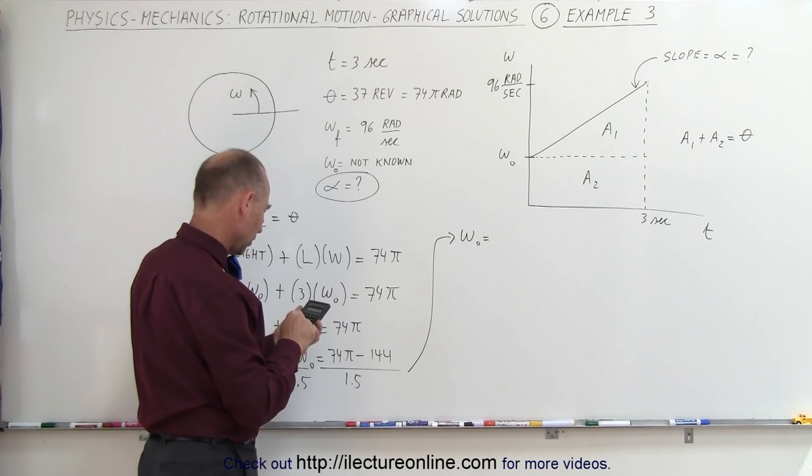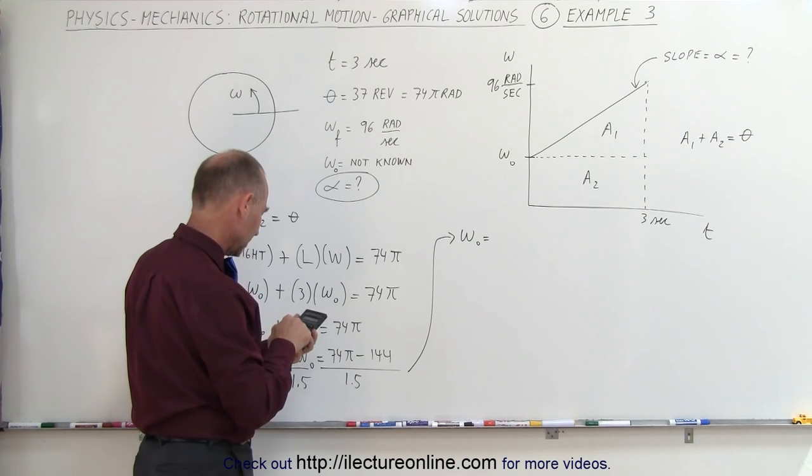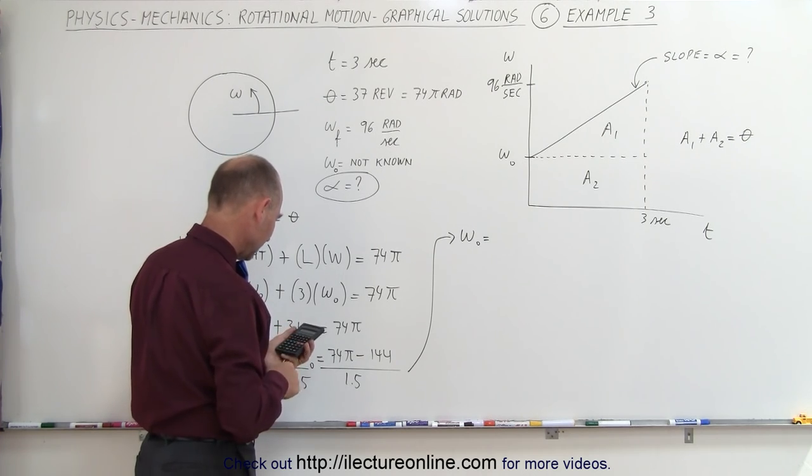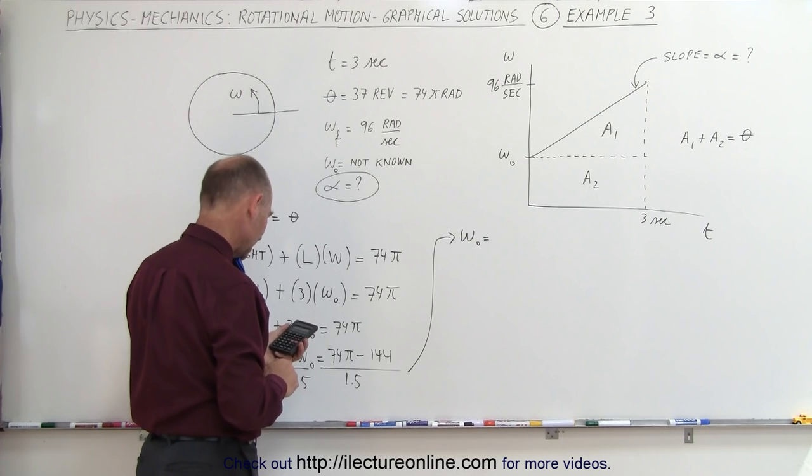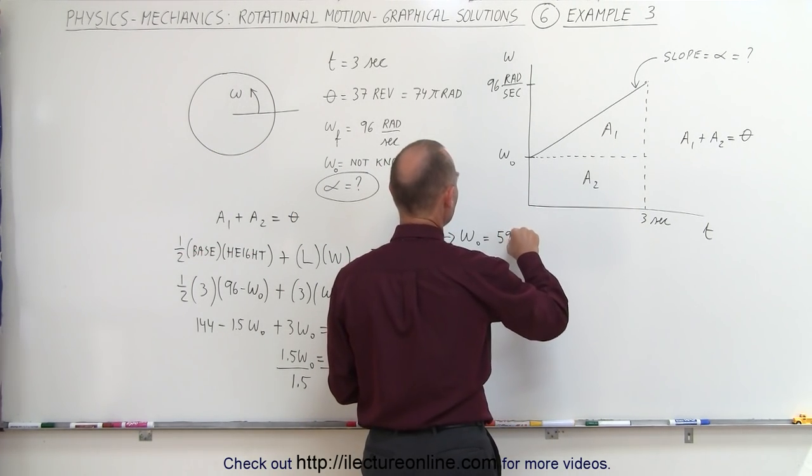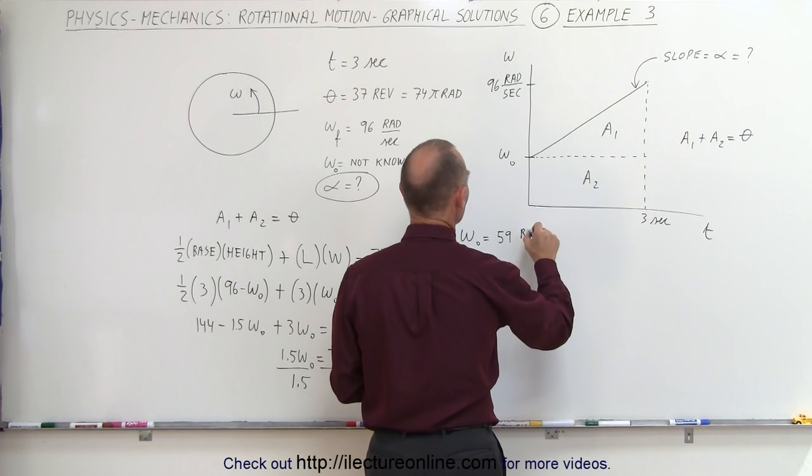Which is 74 times π, subtract from that 144, and divide that by 1.5. It looks like it's 58.98. So that's close enough to 59. 59, and that would be radians per second.